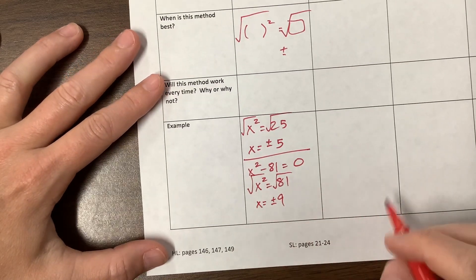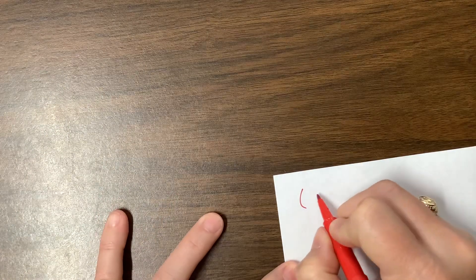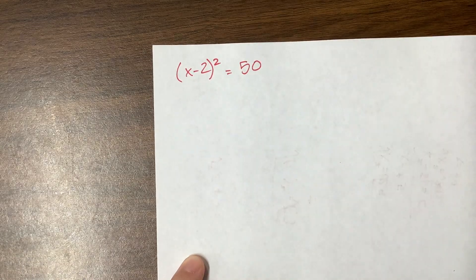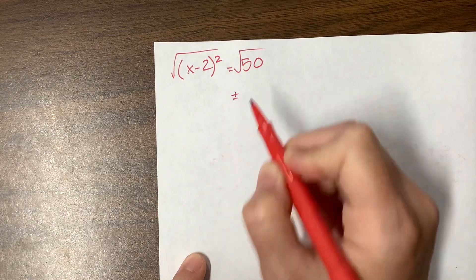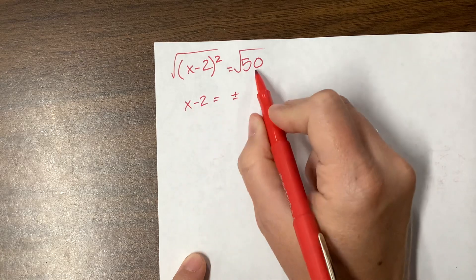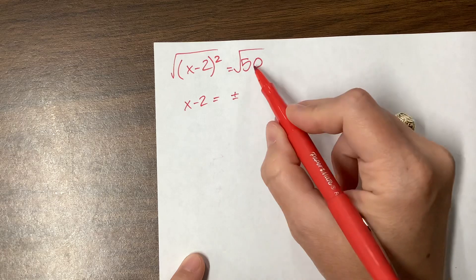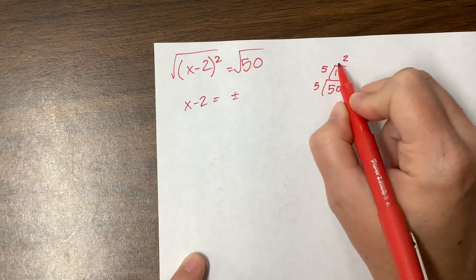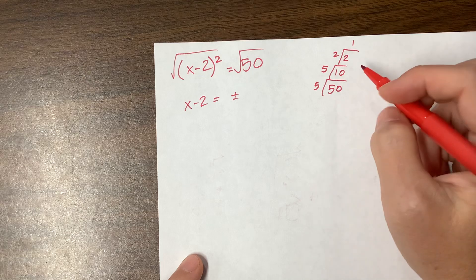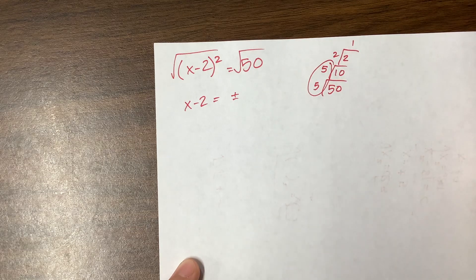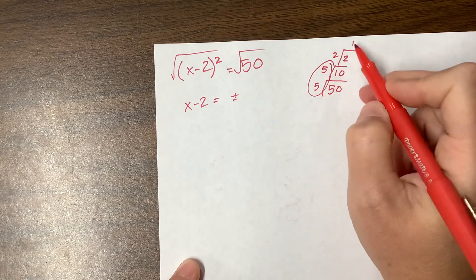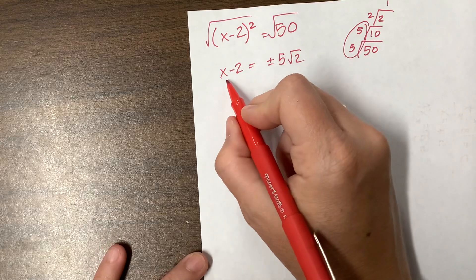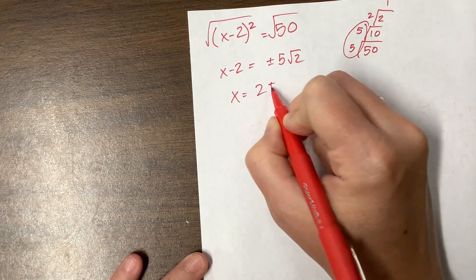Another example on the answer key: x minus 2, squared, equals 50. I do square root, square root, plus, minus, giving me x minus 2 equals plus or minus the square root of 50. Since 50 is 25 times 2, and using prime factoring to find pairs, the square root of 50 simplifies to 5 root 2. Now I just add 2 to both sides, so x equals 2 plus or minus 5 root 2.